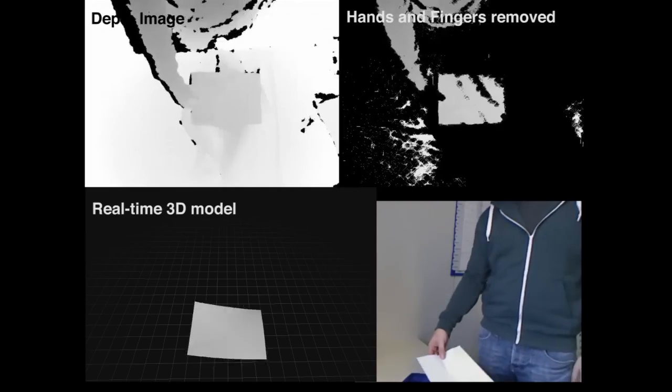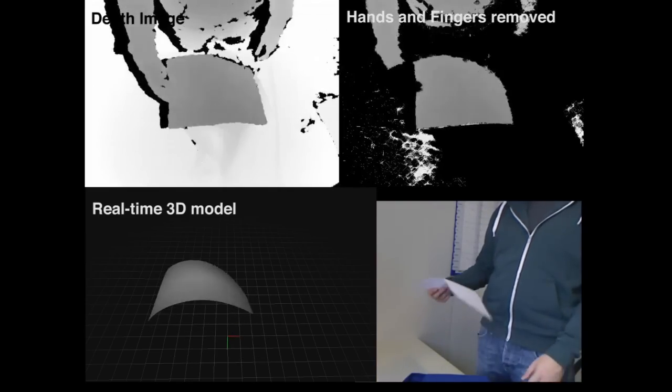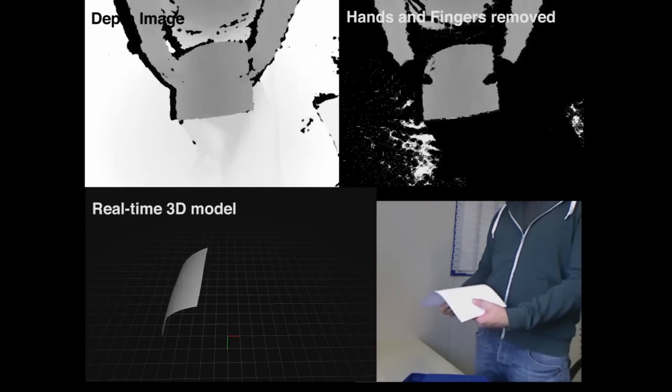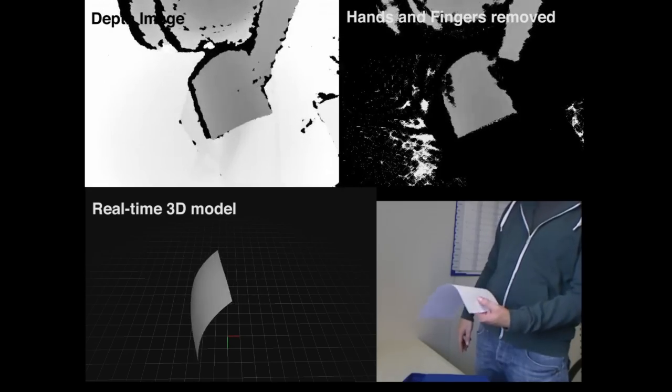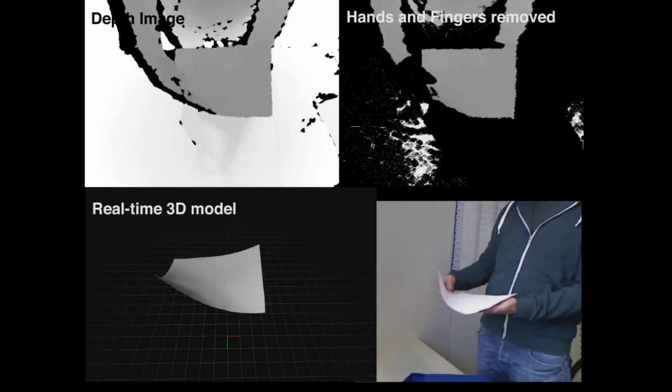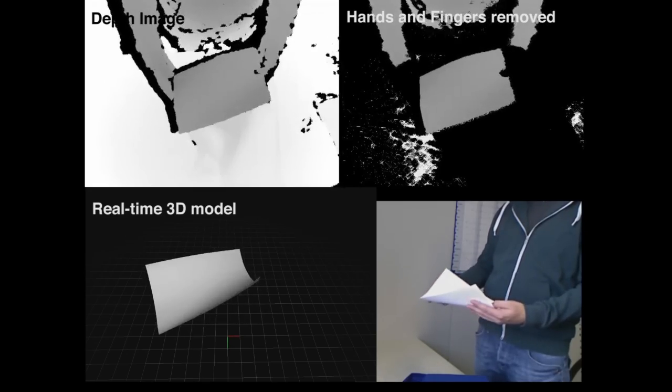Our approach is very robust to occlusion created by the user's hands and fingers. We present a novel approach for automatically detecting skin by analyzing reflectivity and translucency in the raw infrared image of the Kinect sensor.